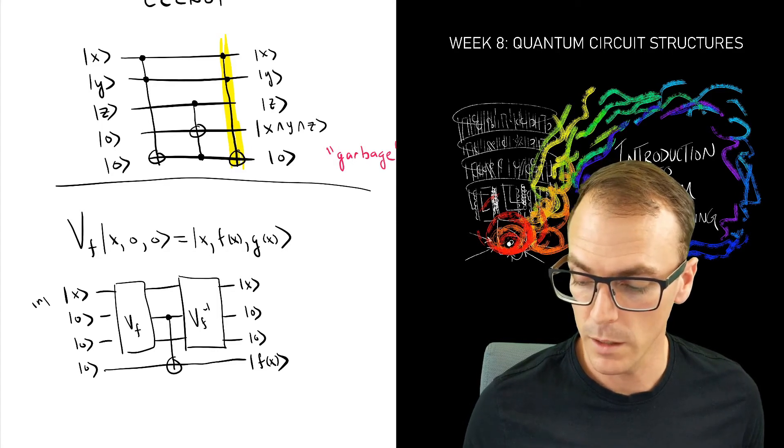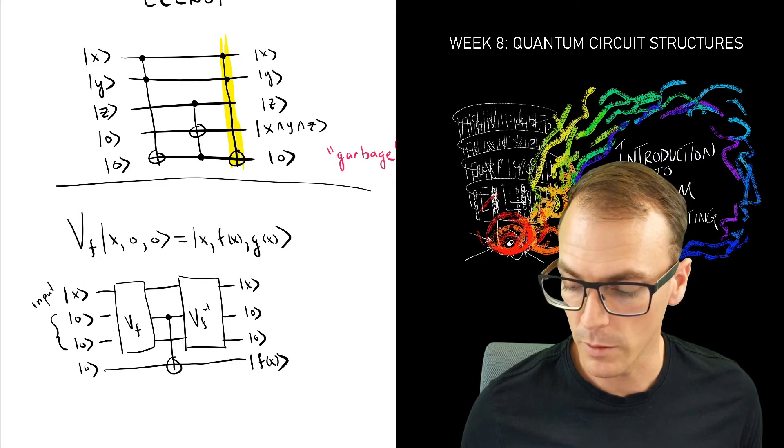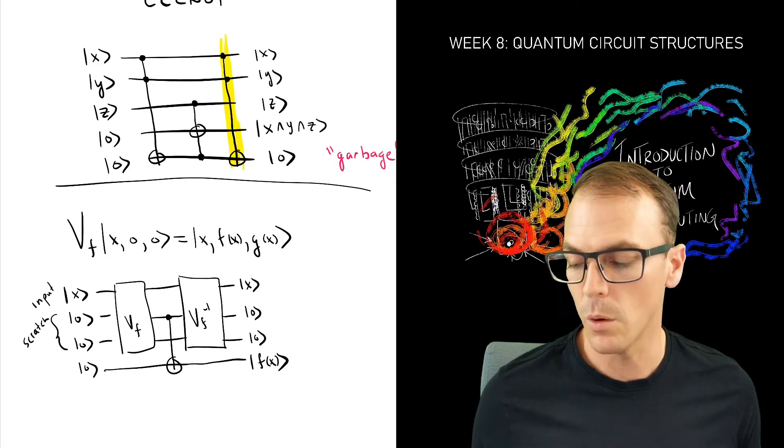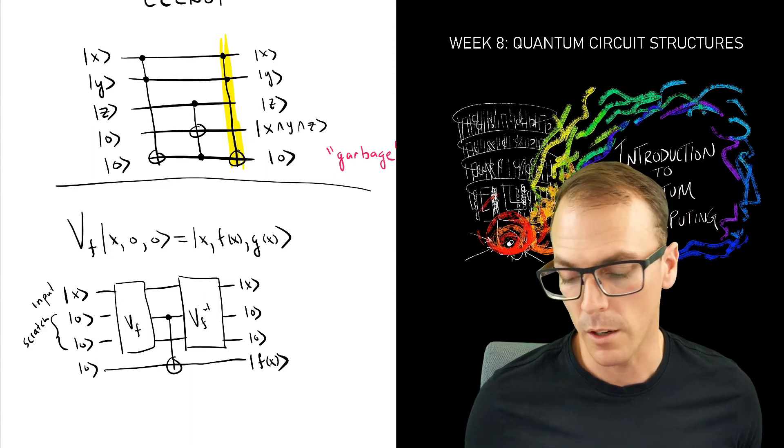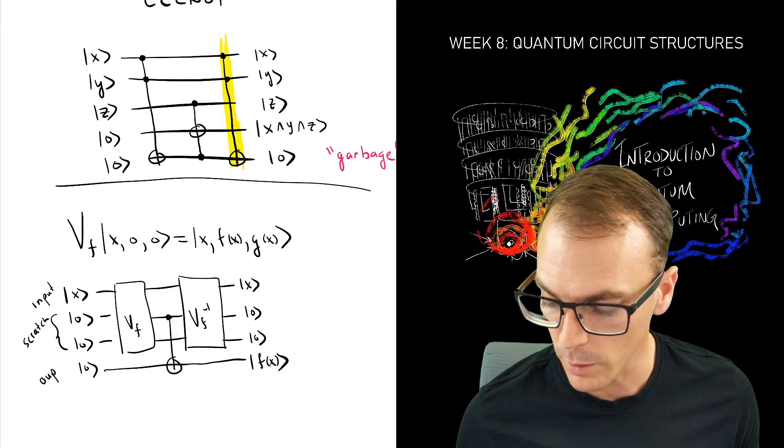So we have our input, our data, and maybe we have these, which we call scratch or work registers. And eventually one of them we might call the garbage register. And finally, we have our output register.